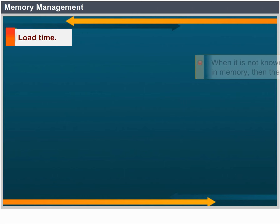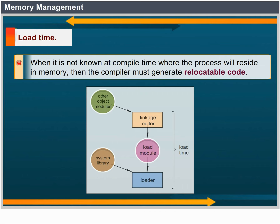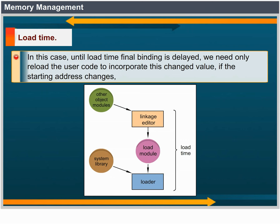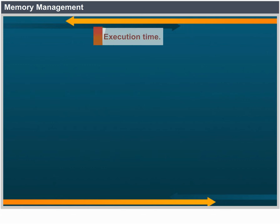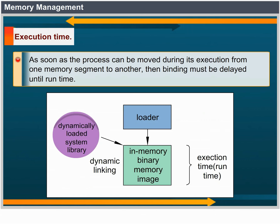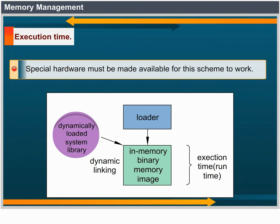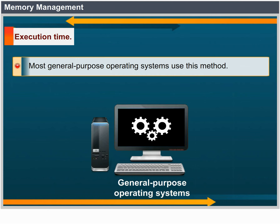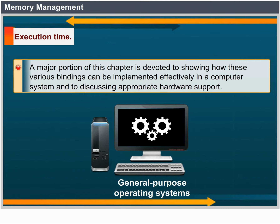Load time: if it is not known at compile time where the process will reside in memory, then the compiler must generate relocatable code. In this case, final binding is delayed until load time. If the starting address changes, we need only reload the user code to incorporate this changed value. Execution time: if the process can be moved during its execution from one memory segment to another, then binding must be delayed until run time. Special hardware must be available for the scheme to work. Most general-purpose operating systems use this method.